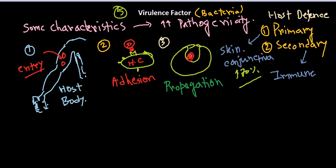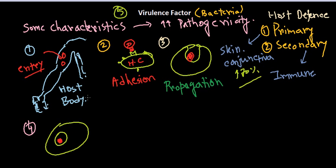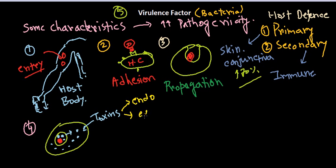Inside the host cell, the bacteria will damage the host cell, get food from it, and complete their life cycle. The fourth part of the journey is damaging the host cell. The organism, sitting inside a vesicle after engulfment, releases toxic materials. These toxins can be of two types: endotoxins or exotoxins. These toxins cause harm and the host cell becomes damaged.